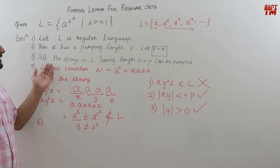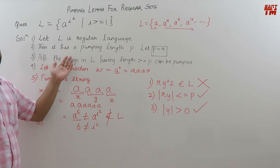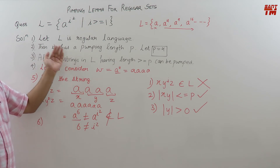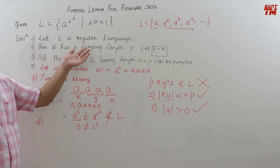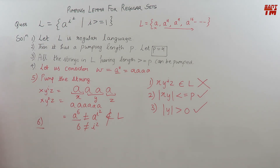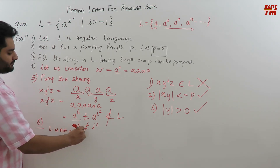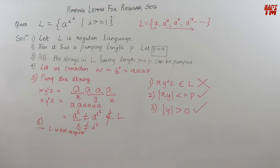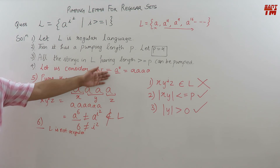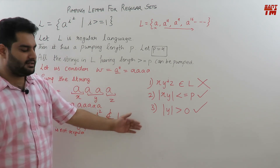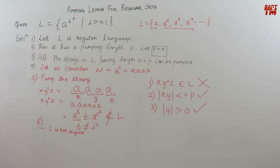This point contradicts our third point. If the third point is contradicted, then obviously the second point is also contradicted — that it has a pumping length. If the second is contradicted, then the first is contradicted — that L is a regular language. So by the pumping lemma through our sixth procedure point, we say that L is not regular. We have to choose a string with length greater than or equal to the pumping length, pump that string, and if on pumping it does not satisfy the three conditions, we have a contradiction to our assumption. So L is not regular in this case. Let us consider one more example.